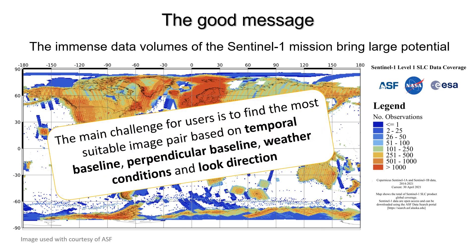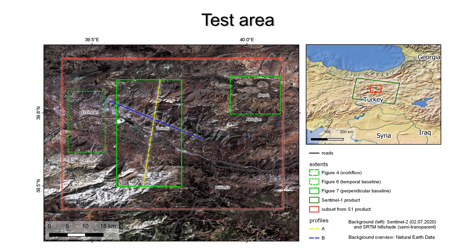The main challenge for users is to find the most suitable image pairs based on temporal baseline, perpendicular baseline, weather conditions, and look direction. The landscapes around the city of Erzincan in central Turkey have been selected to test the impact of different parameters on DEM generation in this study.